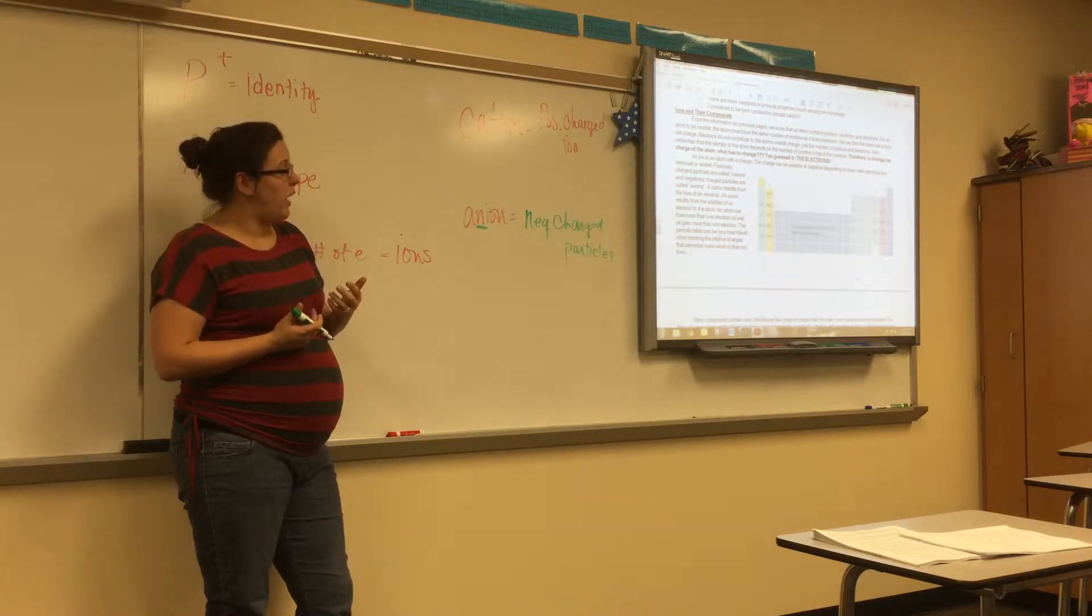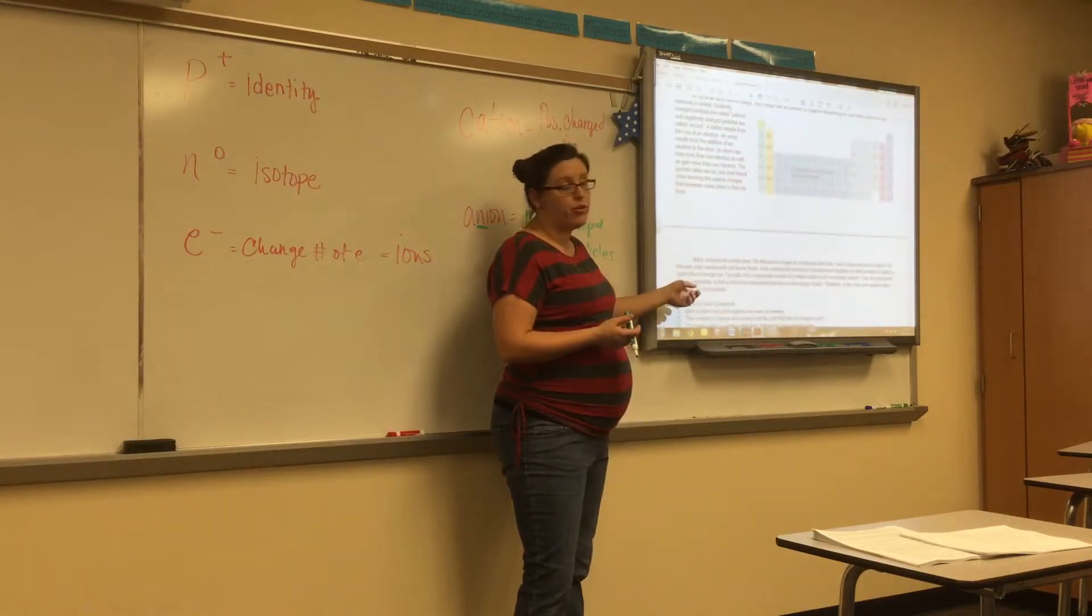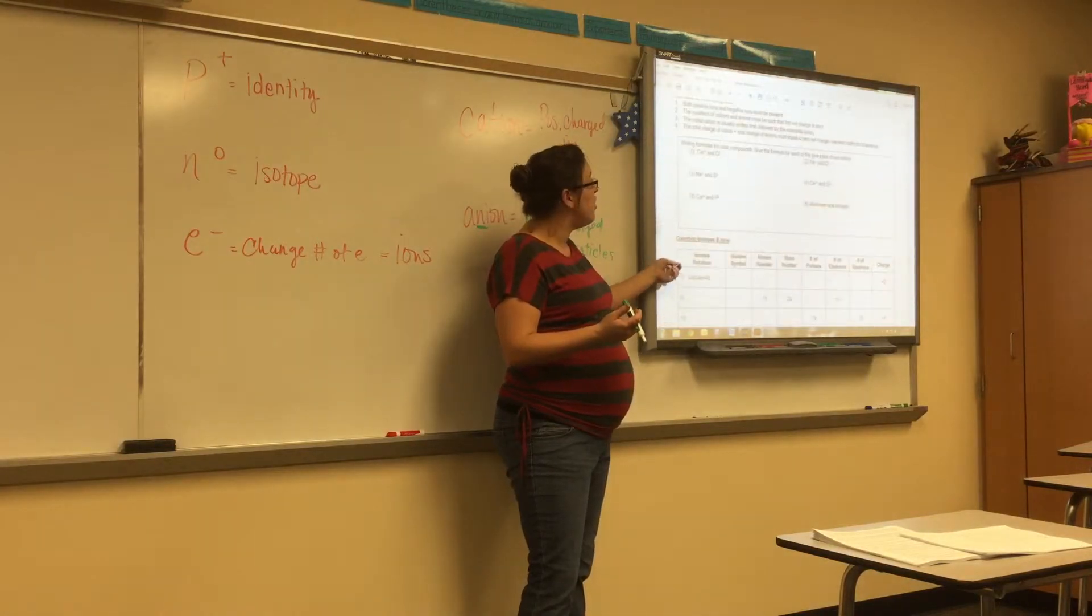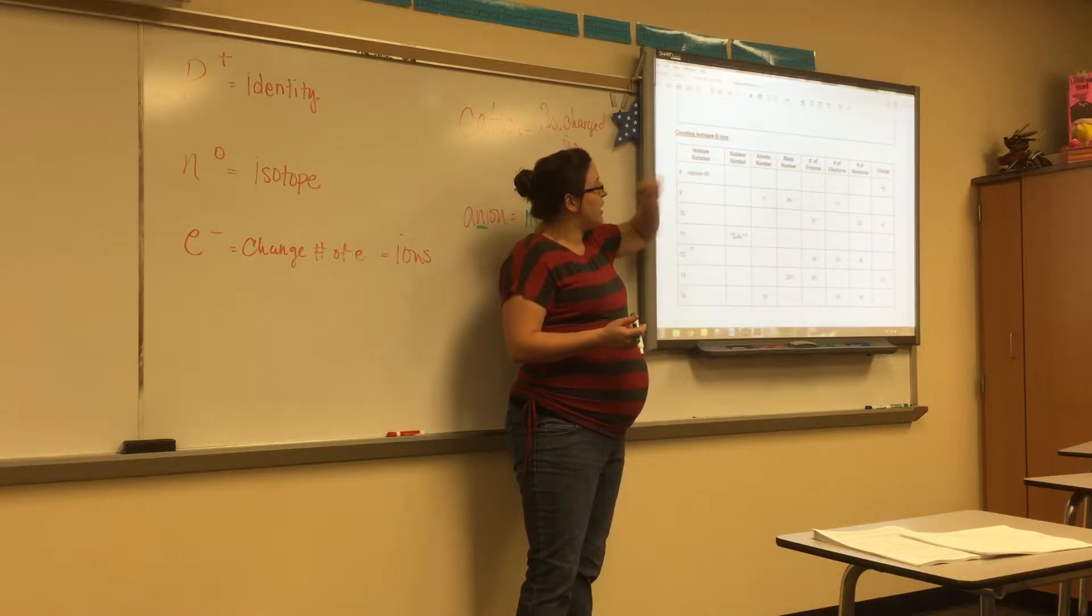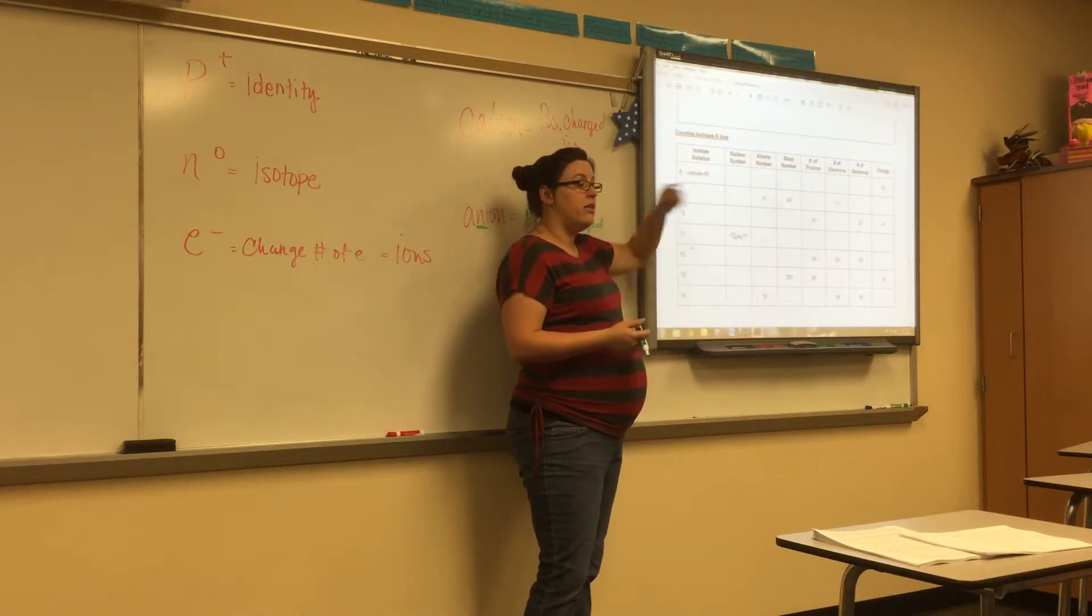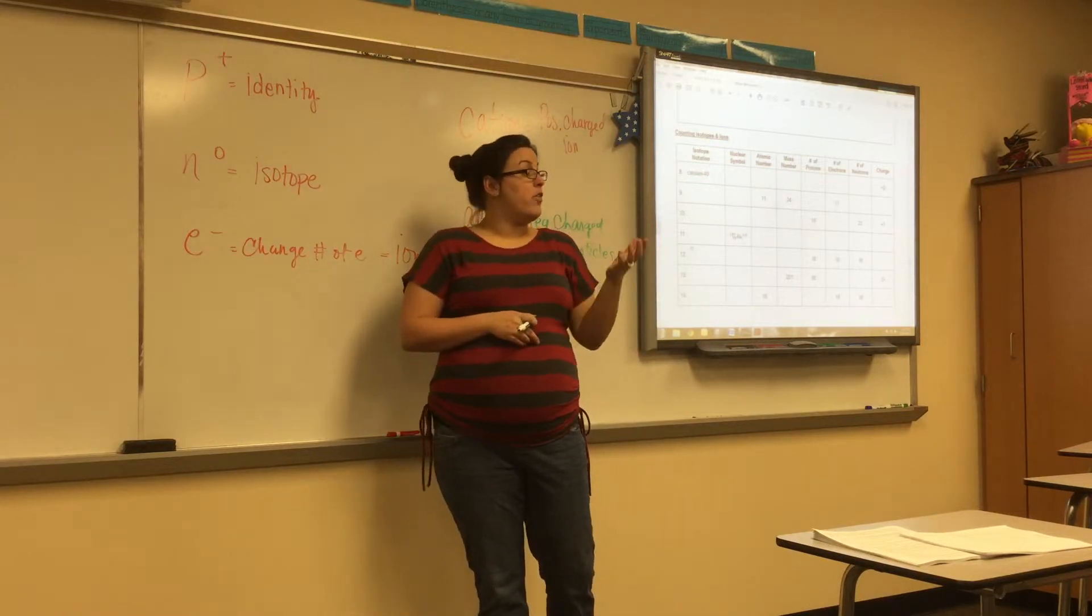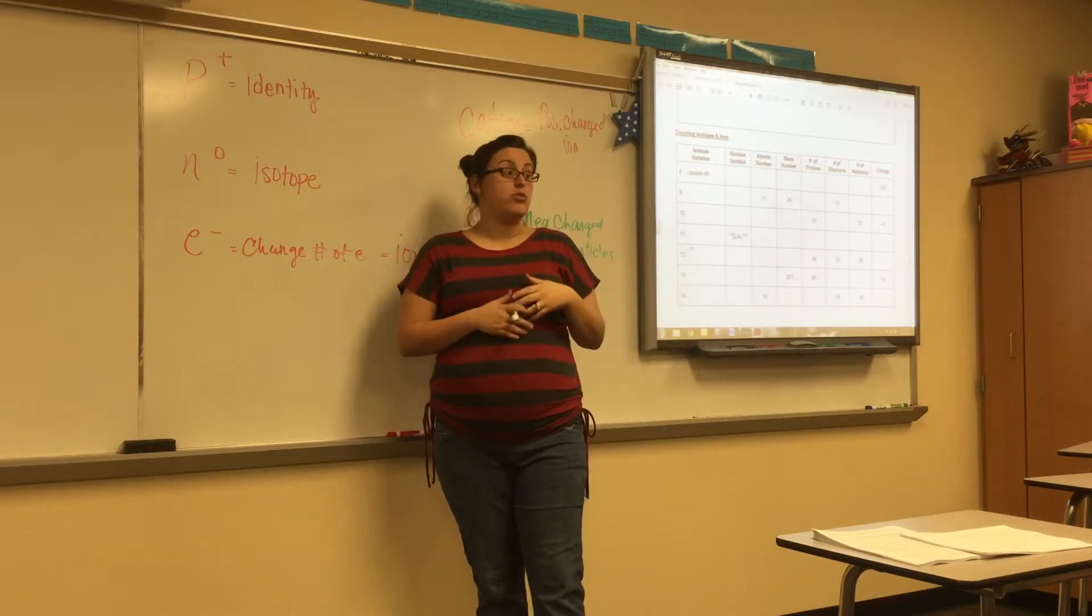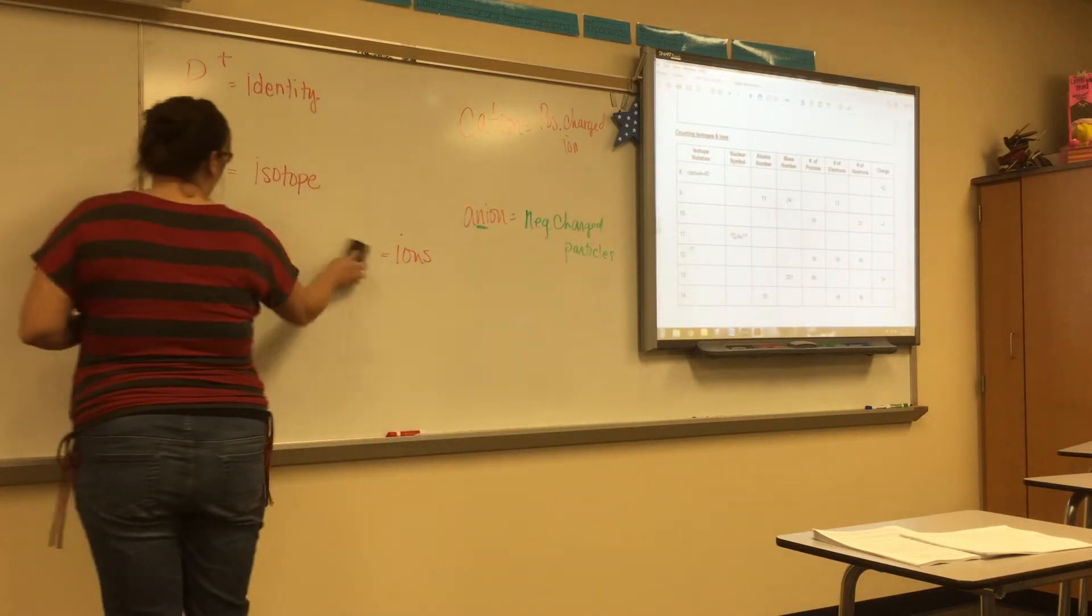Now, where does this come into play? Well, we need to figure out how ions are created. They're either created by losing electrons or gaining. So, in your notes, go down to where it says counting isotopes and ions. It looks like a grid just like the one we've already done. Can they only lose or gain more? No, they can lose, they can lose more or gain more. And we'll figure out how to determine that.